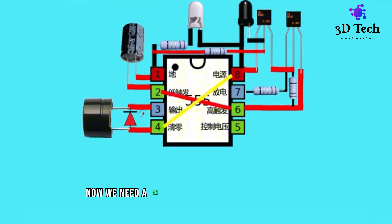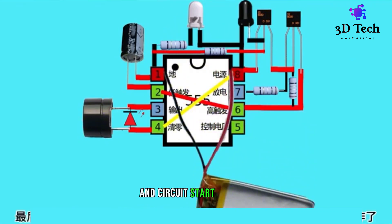Now, we need a 3.7 volt supply to the pin 1 of the IC and the pin 8. And the circuit starts working.